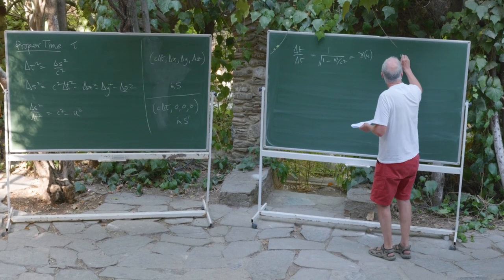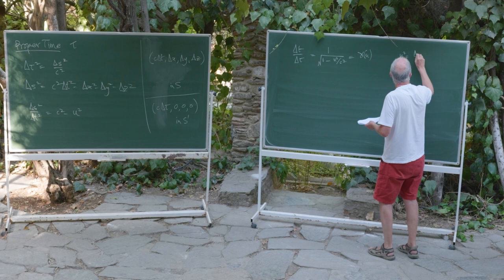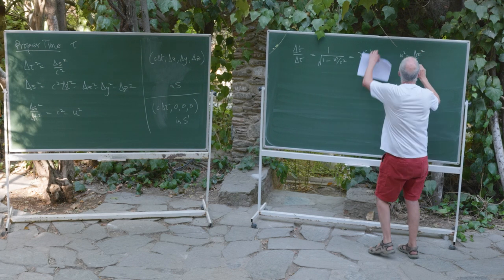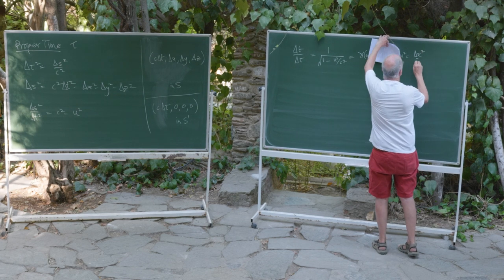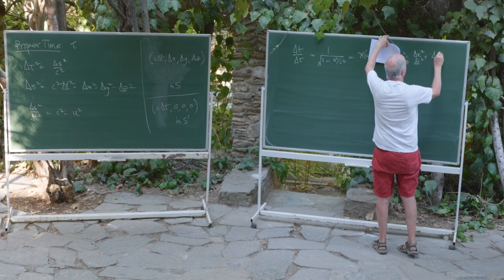So u squared — I'll write it down — it's delta x squared over delta t squared plus delta y squared over delta t squared, and so on.